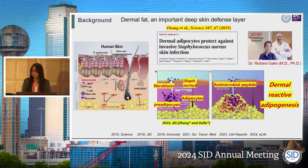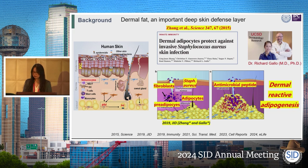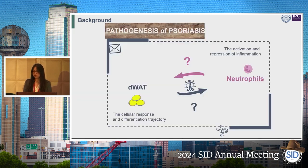Our work is focused on dermal fat. When I was in Richard Gallo's lab, we found that dermal fat fights against bacterial infection by producing antimicrobial peptides. Since then, when I started my own independent lab in China five years ago, I continued to explore the role of dermal fat — how it's regulated during aging and diet-induced obesity, and also its role in skin development and wound healing. Here we are interested in the role of dermal fat in regulating skin immunity, particularly neutrophil function.